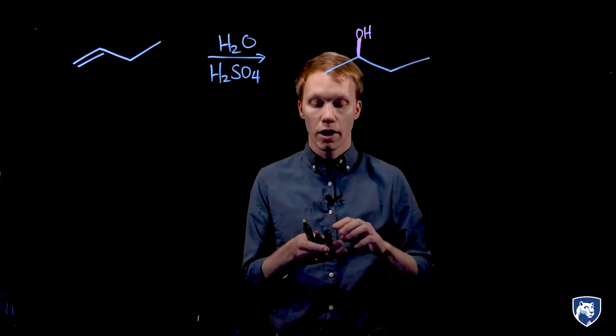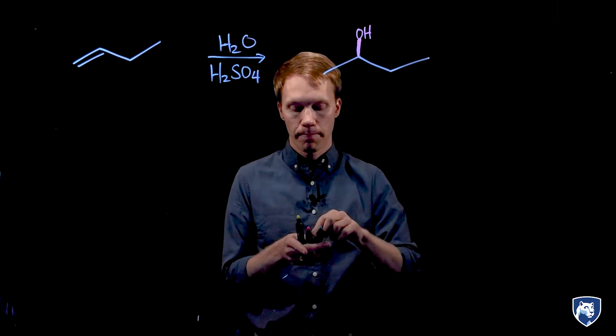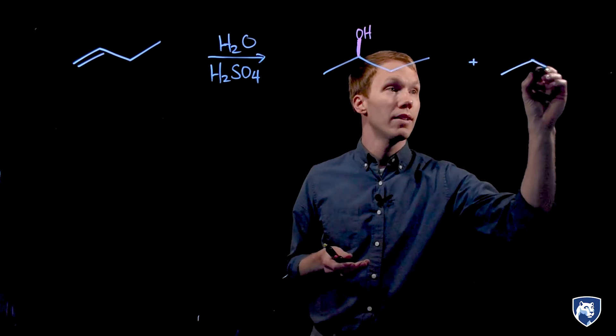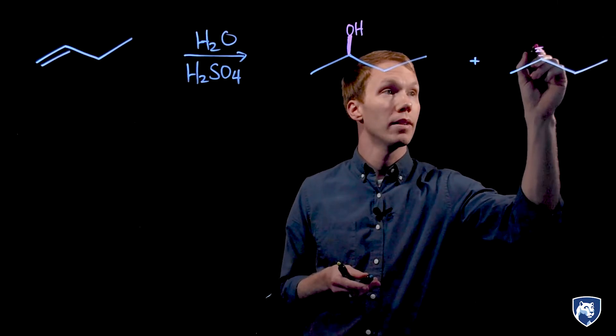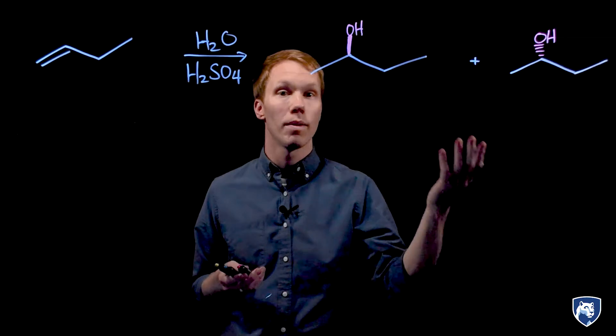This is in accordance with Markovnikov's rule, where the hydrogen is added to the less substituted site. As we'll find out, this mechanism will explain the regioselectivity. We will also be able to explain the stereochemistry through this mechanism to understand why a pair of enantiomers were produced in equal amounts.